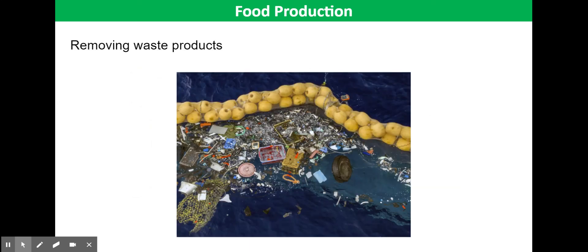Furthermore, fish farms enable waste products to be removed from the water via a variety of different methods. The water can be filtered to remove waste products such as faeces or sewage. Fences, nets, and tanks can be cleaned to minimize exposure to waste, and the location of the fish can be changed to ensure clean water.